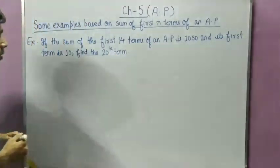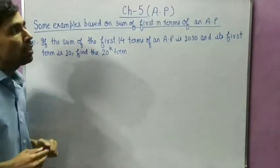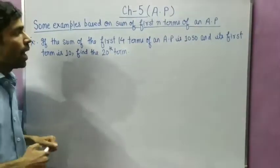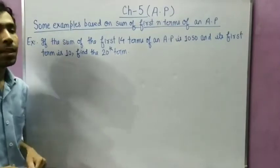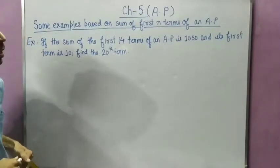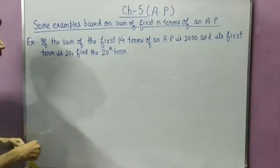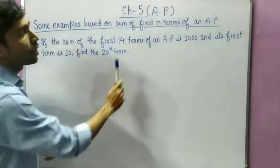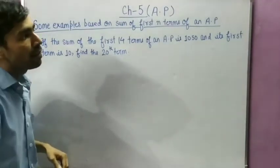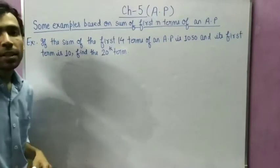The first question is: if the sum of the first 14 terms of an AP is 1050 and its first term is 10, find the 20th term.